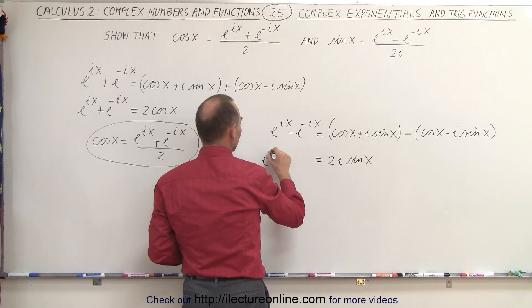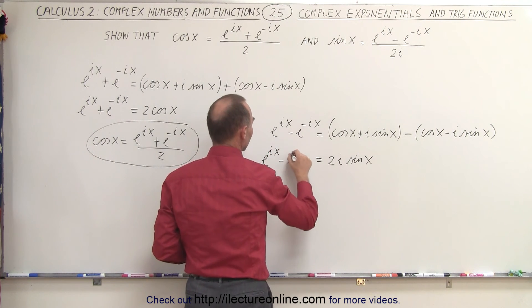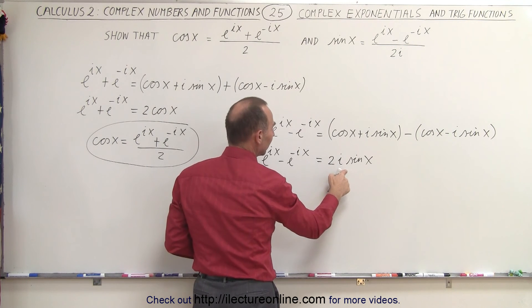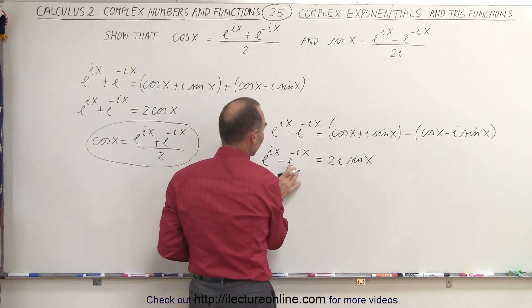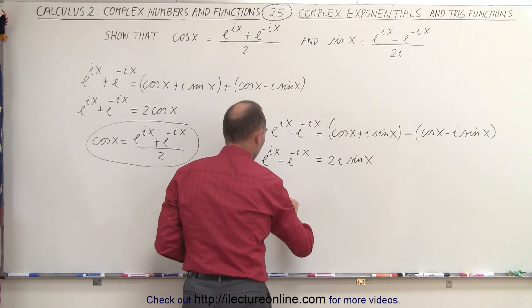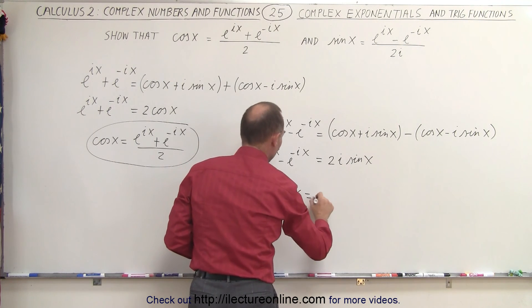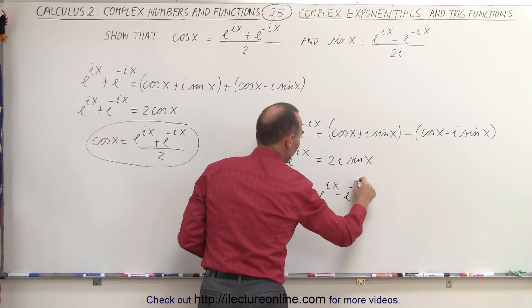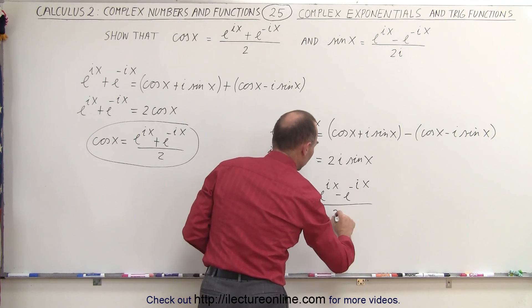And then we'll write this down, e to the ix minus e to the minus ix. If we now divide both sides by 2i, then we get the sine of x is equal to this divided by 2i, or sine of x equals e to the ix minus e to the minus ix, all divided by 2i.